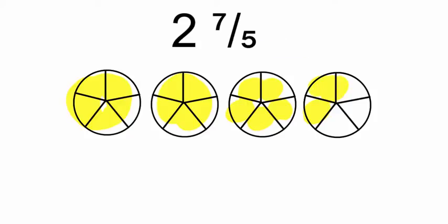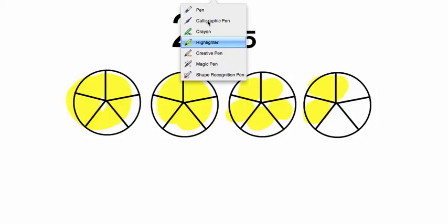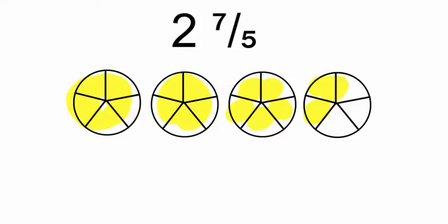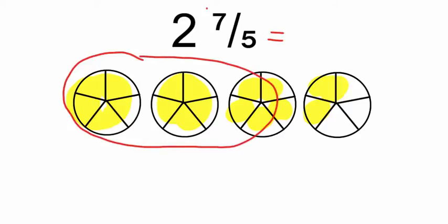So I want to change this now into a mixed number that's going to have a proper fraction. This is pretty easy to see. Basically we have three wholes and two out of five. So we've just basically gone the opposite way — two and seven-fifths is the same as three and two-fifths.